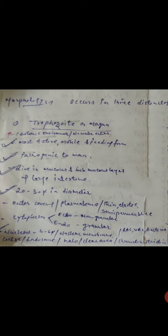It is pathogenic to human beings. It lives in the mucus and submucus layer of the large intestine. It is 20-30 microns in diameter.